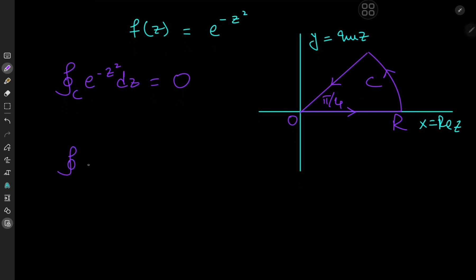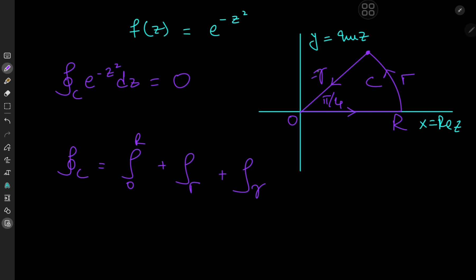The integral over C equals one integral on the real line from zero to r, plus an integral over the arc that I'll call uppercase Γ, and another integral over the straight line I'll call lowercase γ. Treating γ as traversing from the origin outwards to a point on the circumference, the reverse direction introduces a negative sign, so we're actually evaluating negative of the integral along γ.